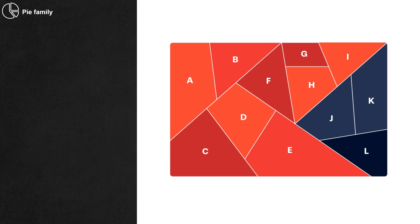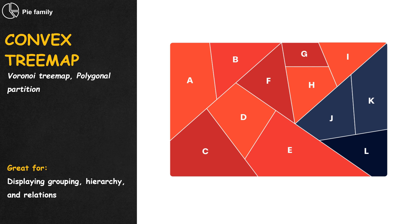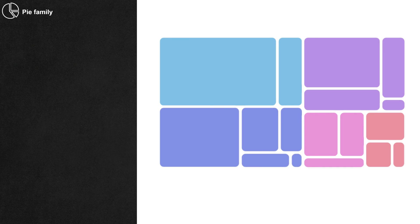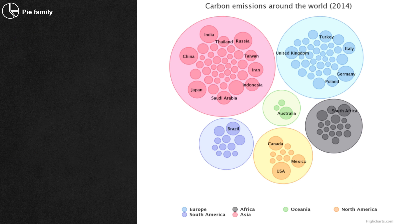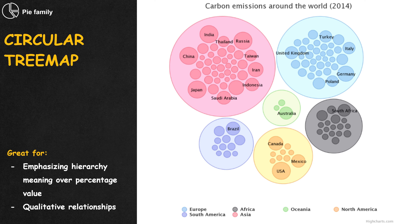What if we want to divide the pie or a waffle into irregular pieces to make it more interesting? We have the convex tree map. You can even assign a hierarchy structure to the pieces through color coding. A less chaotic version is the tree map, where all pieces are rectangles. When hierarchy meaning is more important than the percentage value, people use the circular tree map, where all concepts are represented by bubbles inside or adjacent to each other.